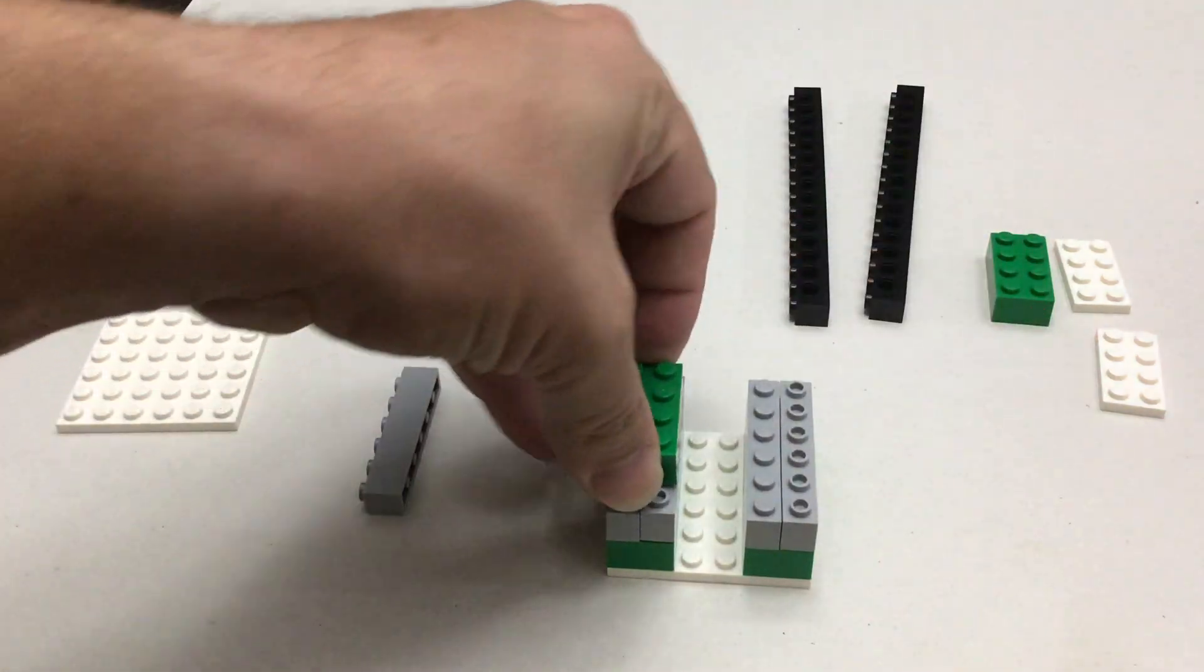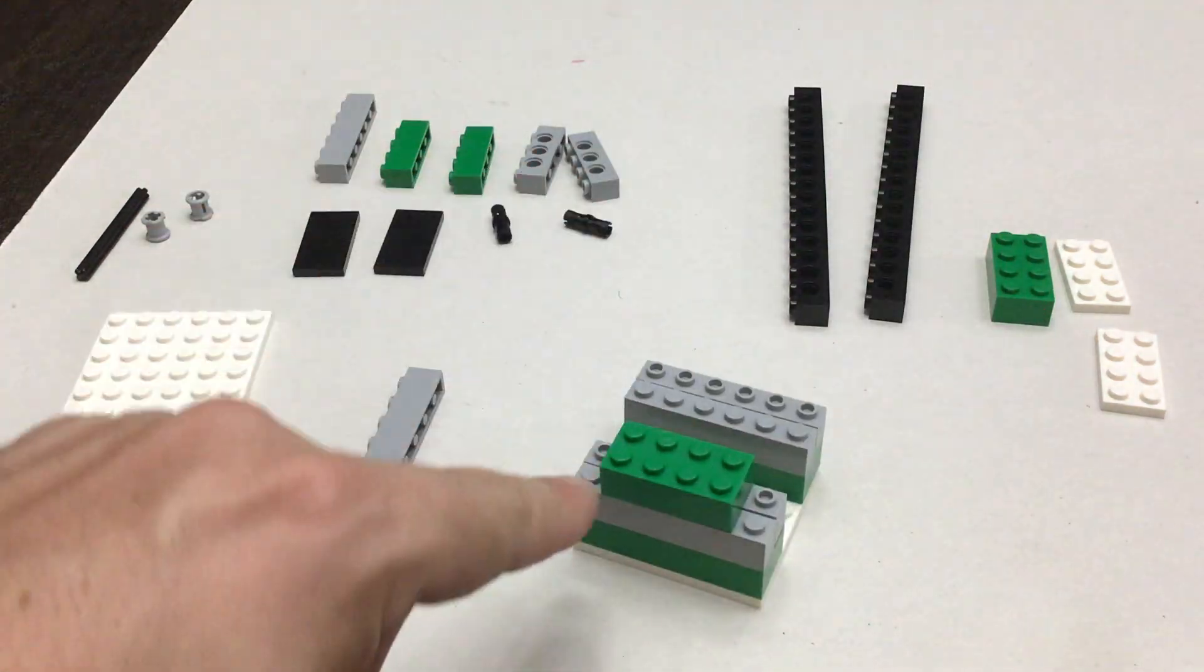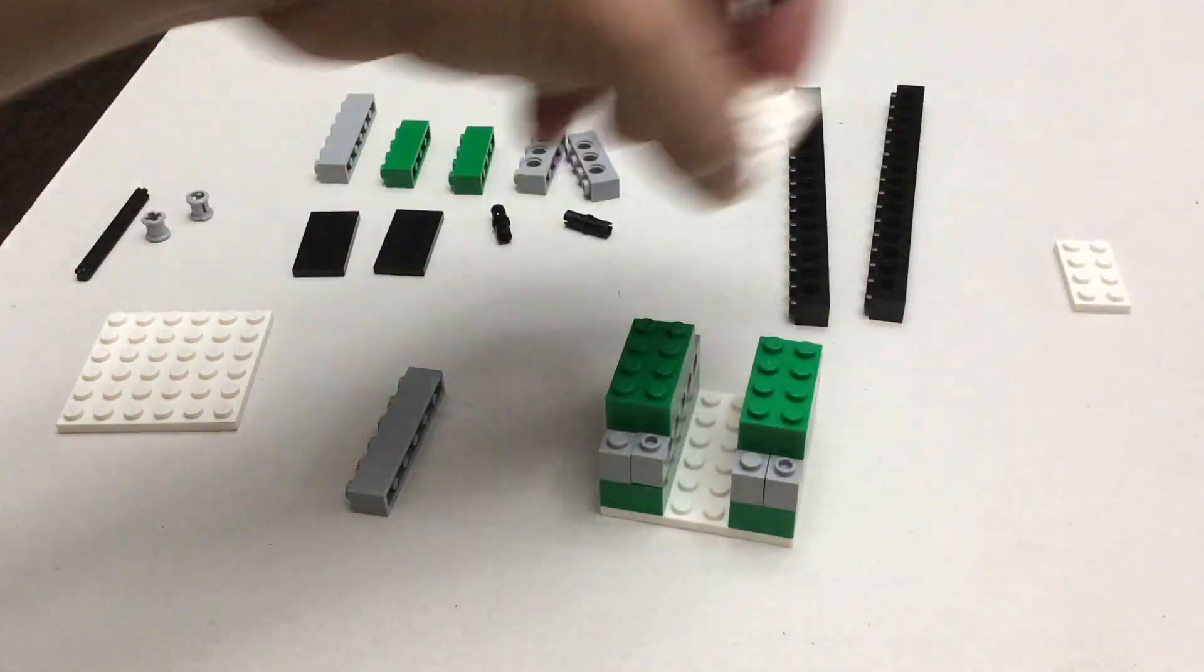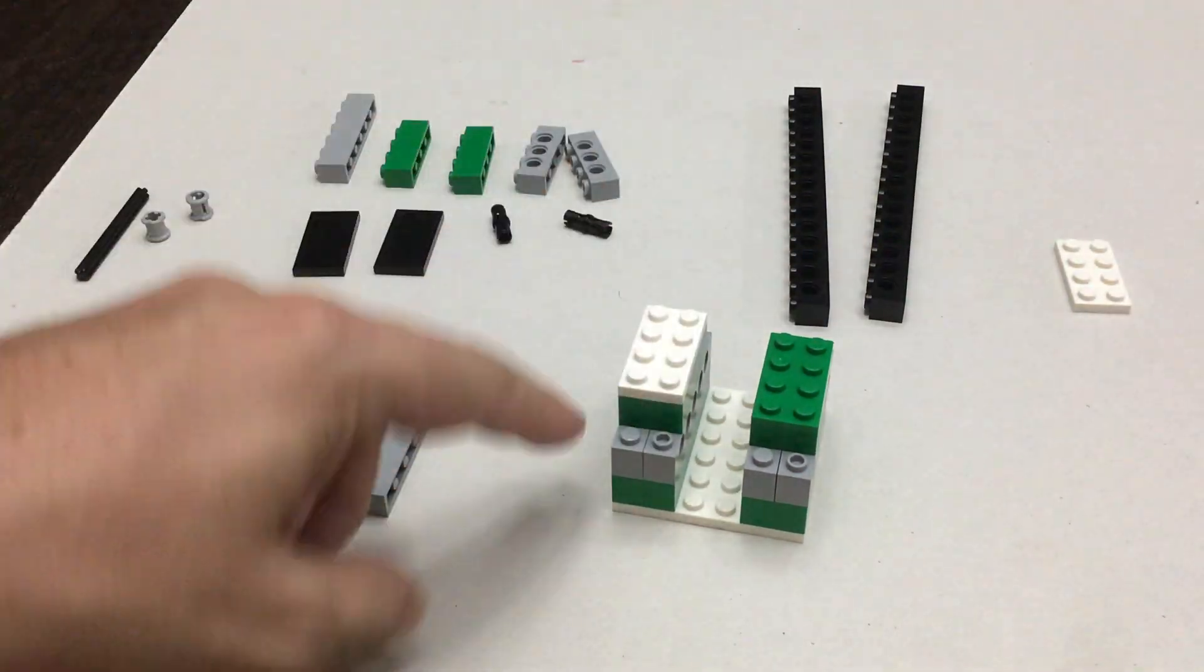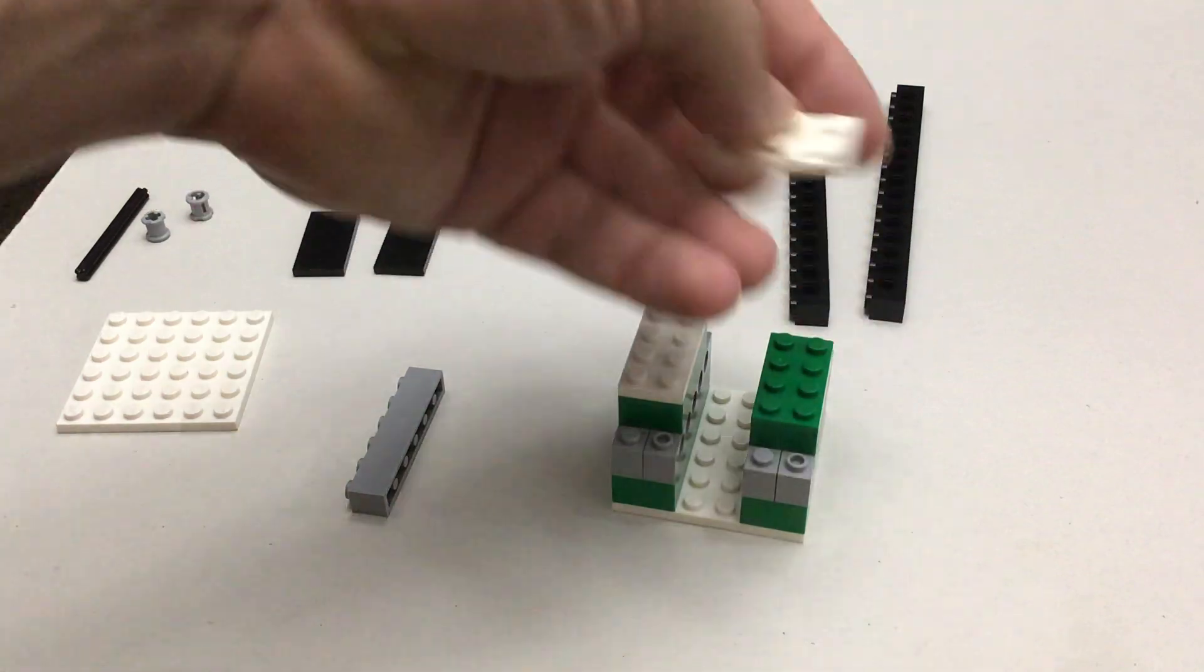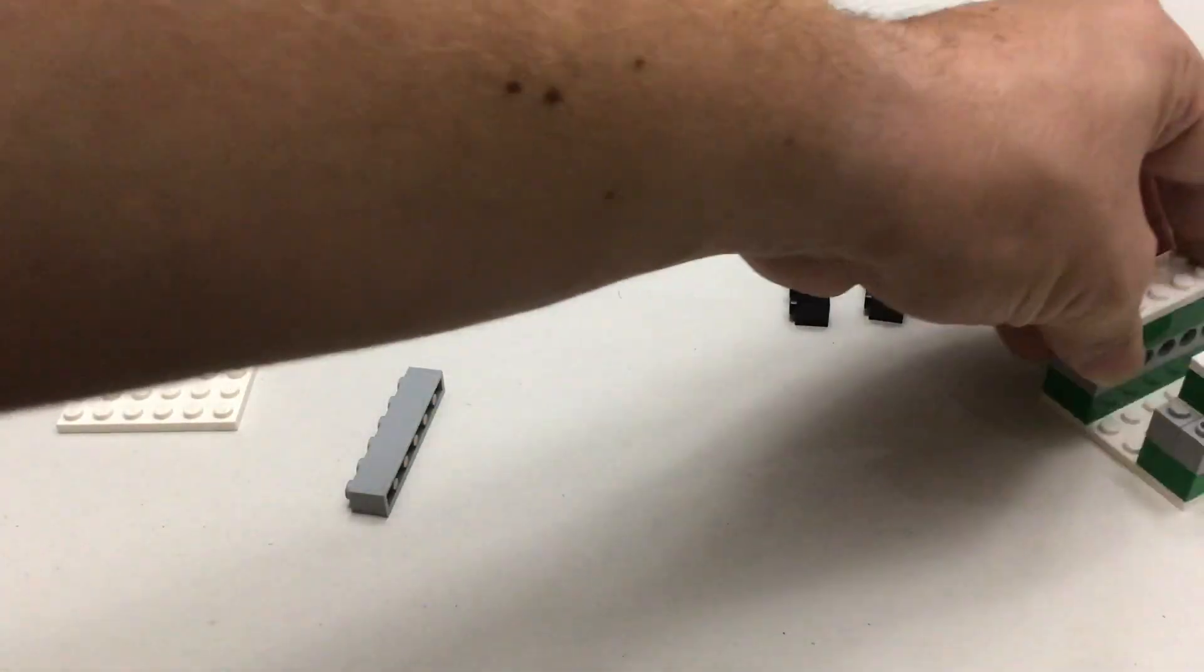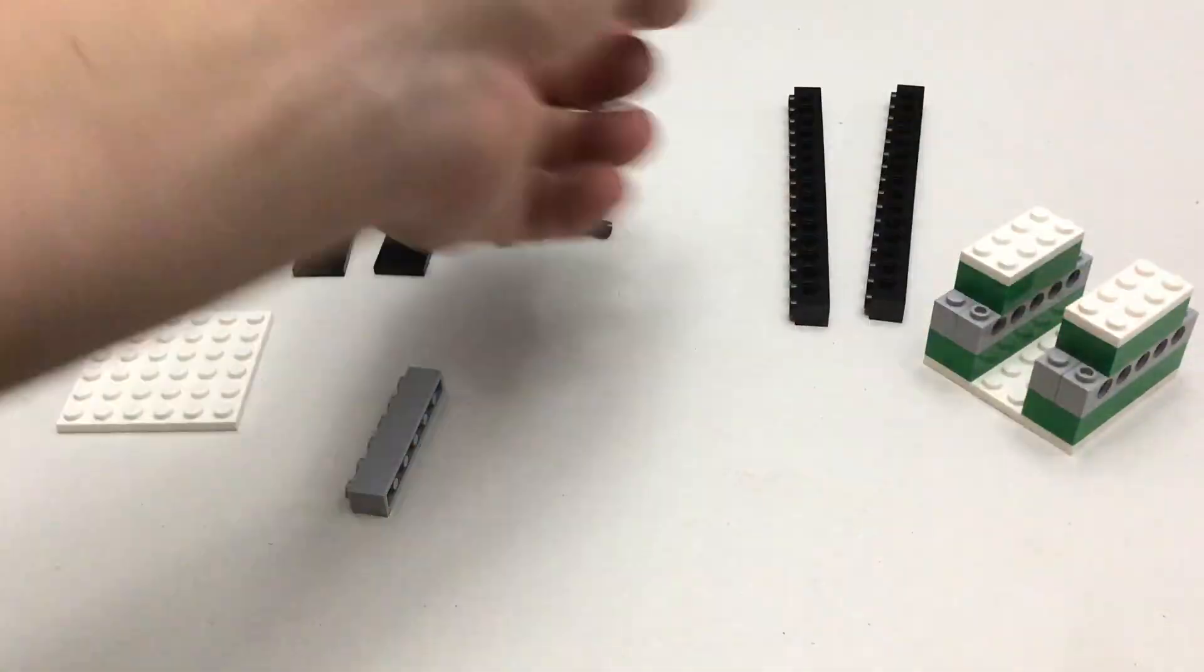Then we're going to take our 2x4 bricks and put those right in the middle. We're going to do that on either side. Then we're going to add our plates, so our 2x4 plates, those are the skinnier ones. Go ahead and add those. Then set this model aside and we're going to work on the catapult arm.